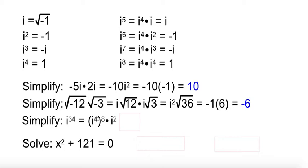Well, i to the 4th is 1. 1 to the 8th power is still 1. i squared is negative 1. 1 times negative 1 is negative 1. No matter what they give you here, you can take out enough 4s to get down to something you can work with.